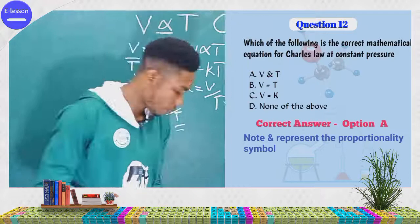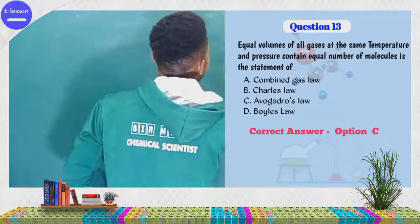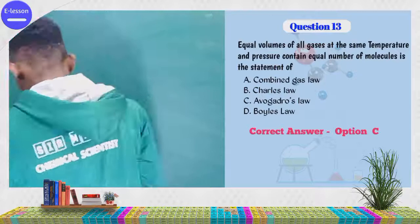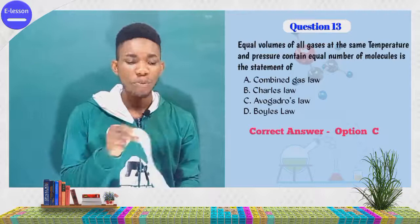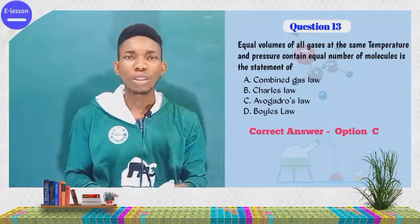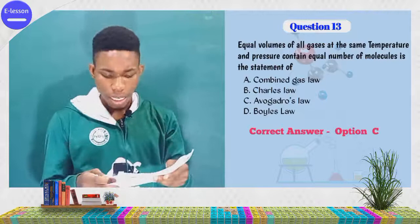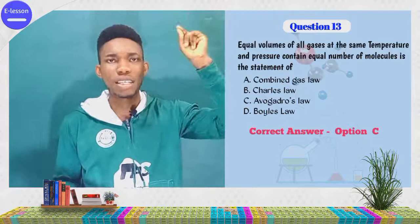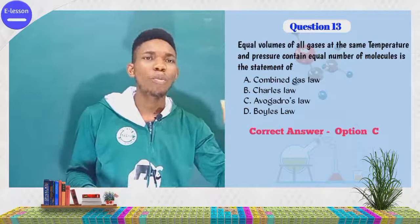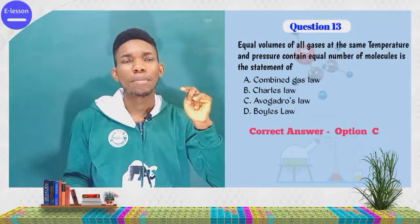Question three: equal volumes of all gases at the same temperature and pressure contain equal numbers of molecules. You don't need to struggle with this one — the correct answer is Avogadro's law. Whenever you see equal volumes at constant temperature and pressure containing the same number of molecules, that is Avogadro's law. Charles's law states that volume is directly proportional to temperature at constant pressure.